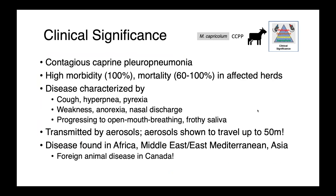In goats, Mycoplasma capriculum causes contagious caprine pleuropneumonia. Just like in cattle with Mycoplasma mycoides, this is associated with a high morbidity rate up to 100%, and an even higher mortality rate of 60 to 100% in affected herds. The disease is characterized by cough, hyperpnea, pyrexia, weakness, anorexia, nasal discharge, and it often progresses to open mouth breathing with frothy saliva. This organism is transmitted by aerosols and has been shown to travel up to 50 meters, so close contact is not required for disease transmission.